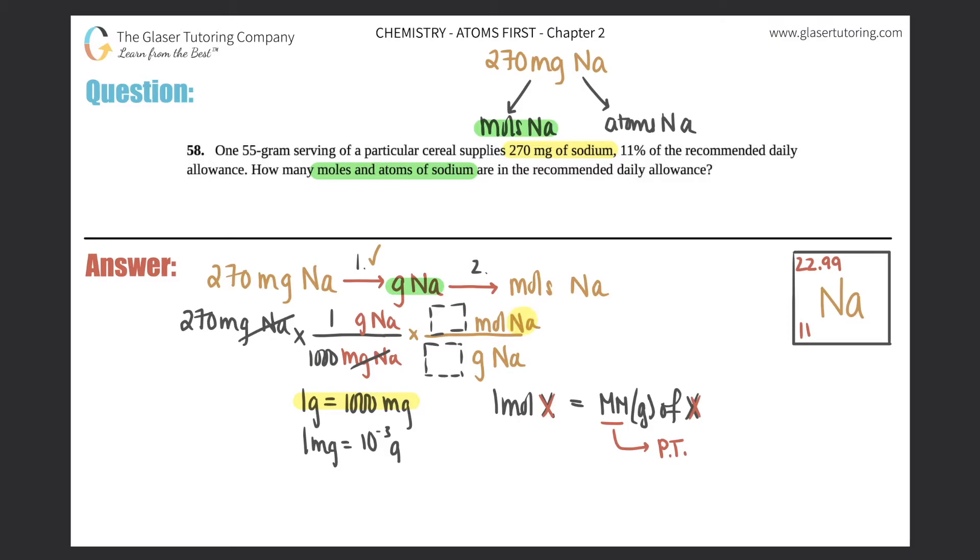And the molar mass can always be found on the periodic table. Now we're searching for sodium. So you should look on the periodic table for sodium, but voila, I have it here. And Na is sodium, right guys?